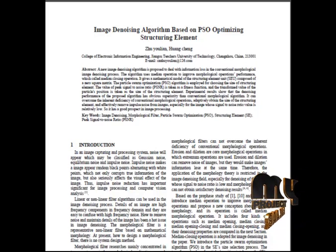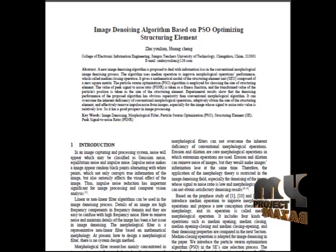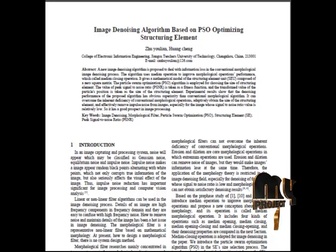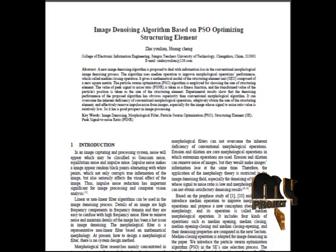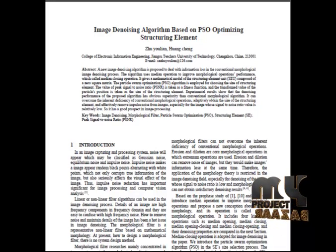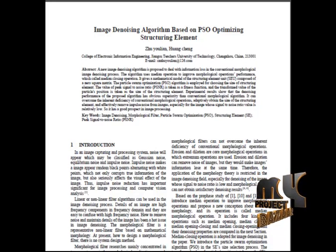It provides the mathematical model for the structuring element unit. Here we use the PSO optimization algorithm for the denoising process. In the denoising process, we initialize a set of particles, search the particles and change the mean value to the corresponding pixel. This process continues until we get the denoised result of the image. In each iteration, we compute the MSE value for the denoised image, and the minimized MSE value is taken as the final denoised image.